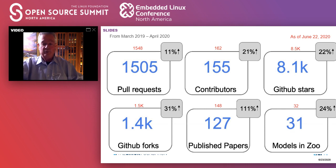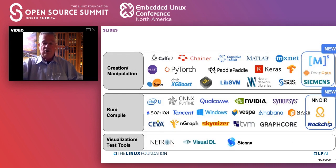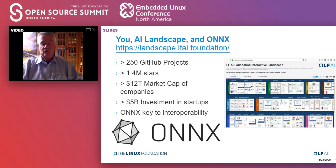We're excited to see this growth and encourage you to get involved. We're constantly adding new members to the ONNX community. ONNX is a graduated project of the Linux Foundation Artificial Intelligence. If you haven't visited the Linux Foundation AI, I encourage you to go out and take a look at the Linux Foundation AI landscape — a diagram showing lots of different open source projects. Over 250 GitHub projects are indicated there.